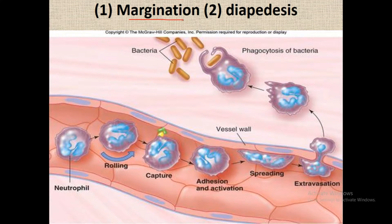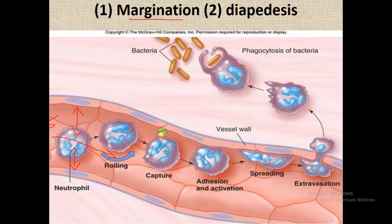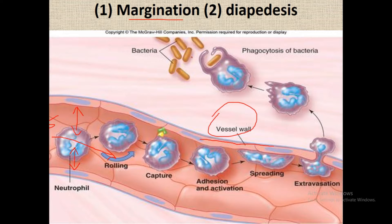The first step is margination. Normally, cells flow in the center of the blood vessel, while serum and plasma material run along the peripheral part. In margination, the cells move out of the central running pool towards the blood vessel wall — from the central position toward the periphery. This step is known as margination.